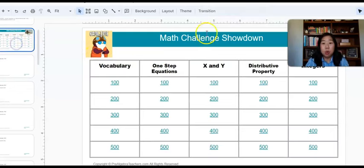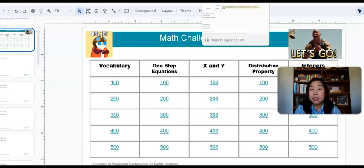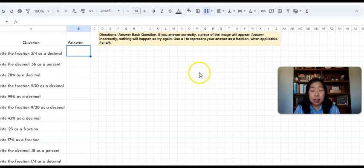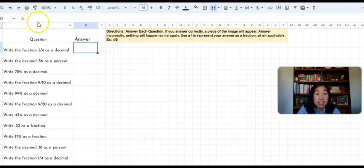If you are looking for ideas for more digital resources, some of the activities that I love personally the most are pixel art. This is an example of fractions, decimals, and percents. So the way that pixel art works is it's basically a blank Google Excel sheet. And you can use this in Excel, or you can use this in Google sheets. But it's self-correcting. And that's why I really, really love it.